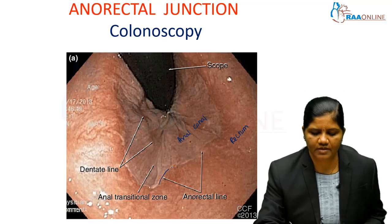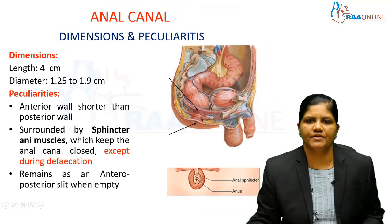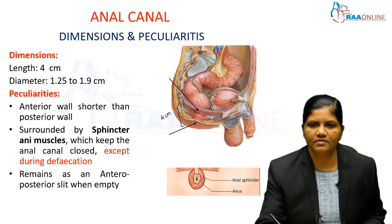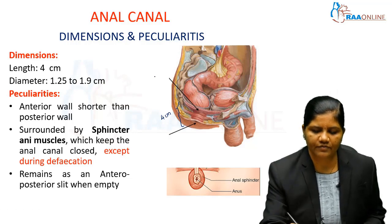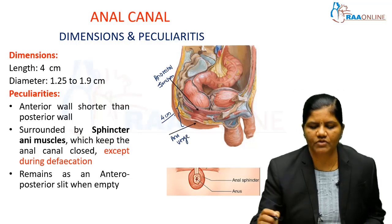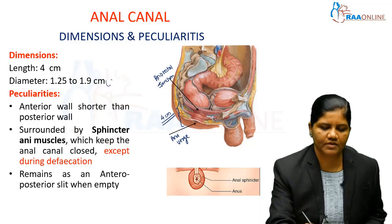Let us see the dimensions and peculiarities. The length of the anal canal is around 4 cm — from the pelvic diaphragm or anorectal junction to the anal verge. The diameter is approximately 1.25 to 1.9 cm, that is approximately 2 cm in diameter.